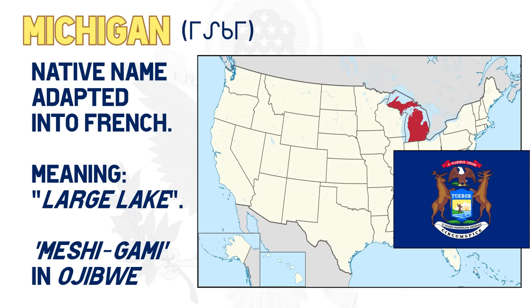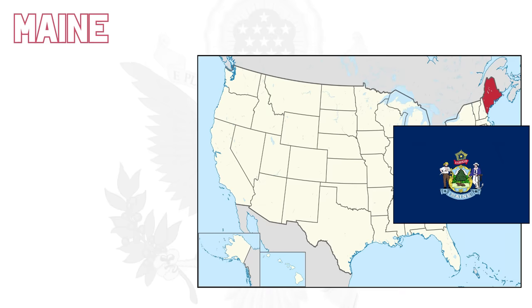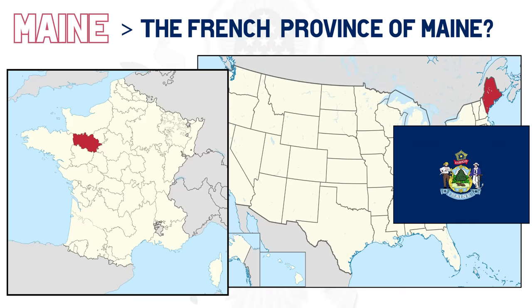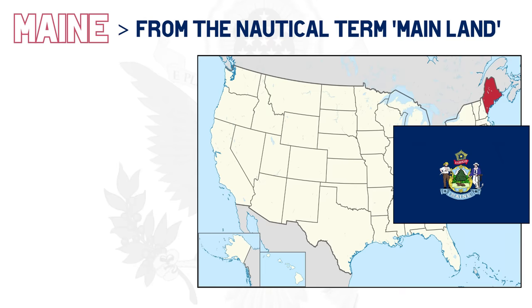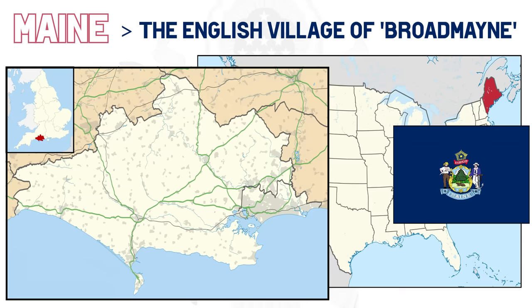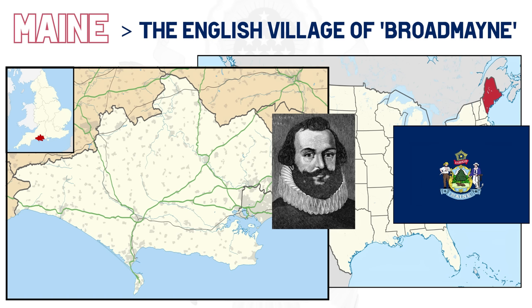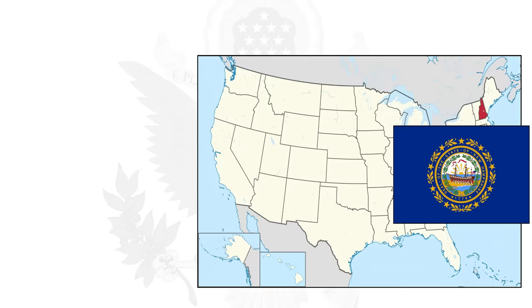Let's jump to the northeast and go along the coast, starting with Maine. The origin of the name Maine is unclear. One theory is that it was named after the French province of Maine. Another is that it derives from the nautical term 'the mainland,' and a more recent proposal is that it was named after the English village of Broadmain, the family estate of Sir Ferdinando Gorges, the colony's founder. A combination of the last two seems to be the most likely.